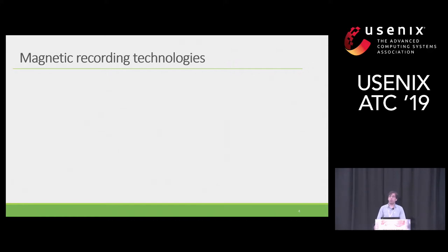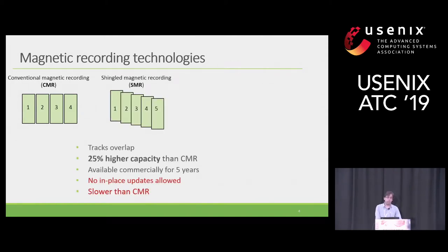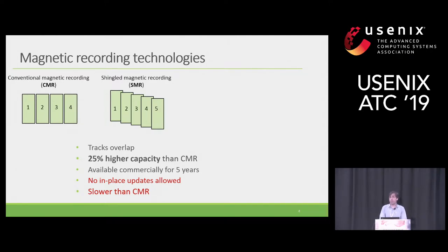What is interlaced magnetic recording or IMR? To answer this, I'll compare magnetic recording technologies. Starting with the basic one: conventional magnetic recording or CMR, where tracks are located beside each other. A newer technology, shingled drives or SMR, appeared about six or seven years ago. The idea is to overlap tracks to offer higher capacity — about 25% increase. However, it suffers from a serious limitation: no random write is allowed on all the tracks, so performance is lower than a conventional drive.